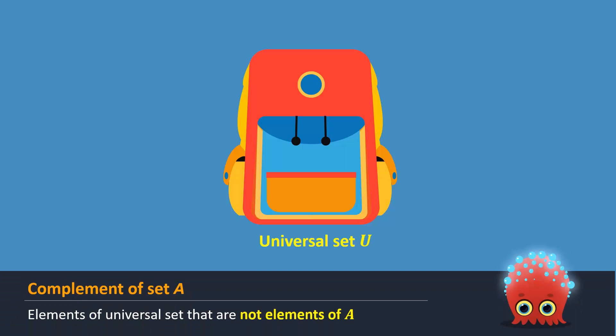The complement of A is the set of elements of a universal set that are not elements of A. It is usually denoted by A prime or A complement.